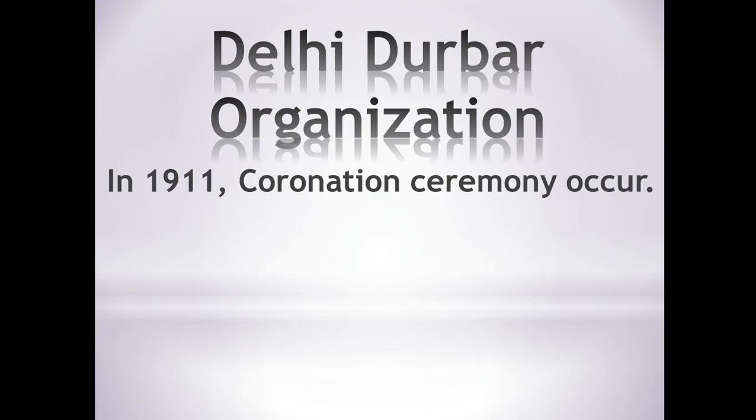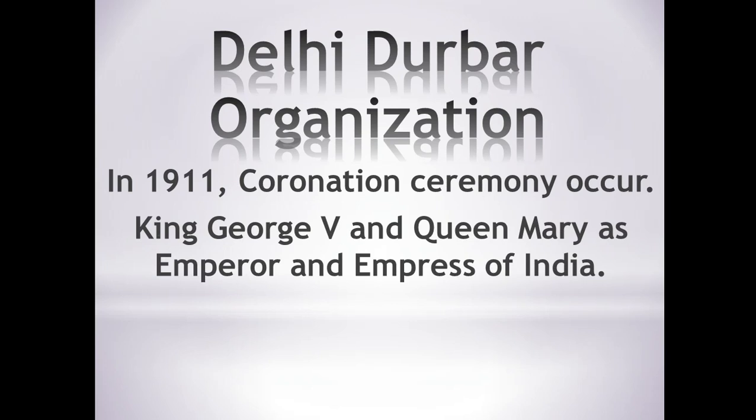In 1911, the Delhi Durbar was organized. It featured a coronation ceremony — that is, a crowning ceremony — for King George V and Queen Mary. King George V was chosen as Emperor of India and Queen Mary as Empress. India's prominent and wealthy people were invited. After this event, the capital was officially shifted from Calcutta to Delhi.